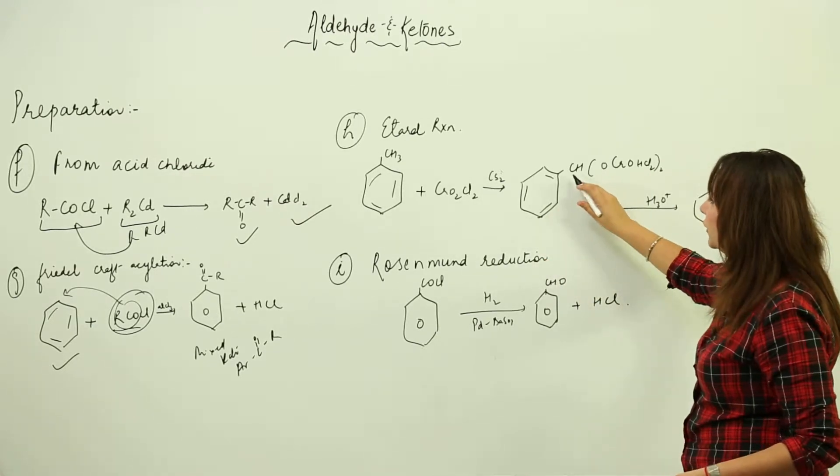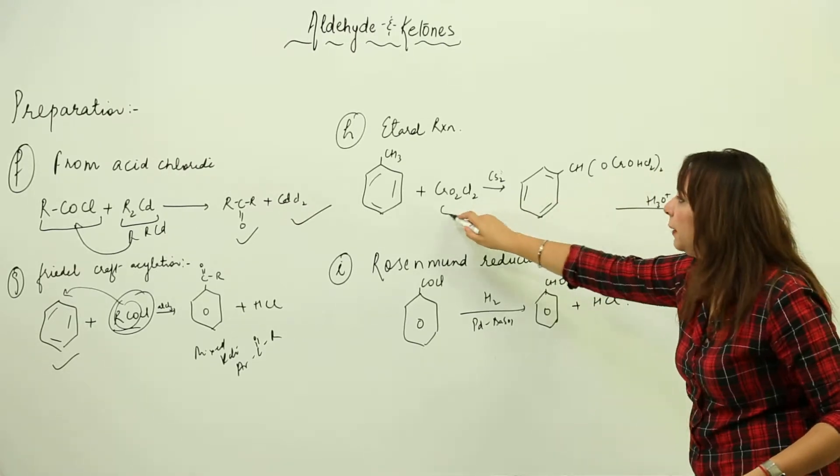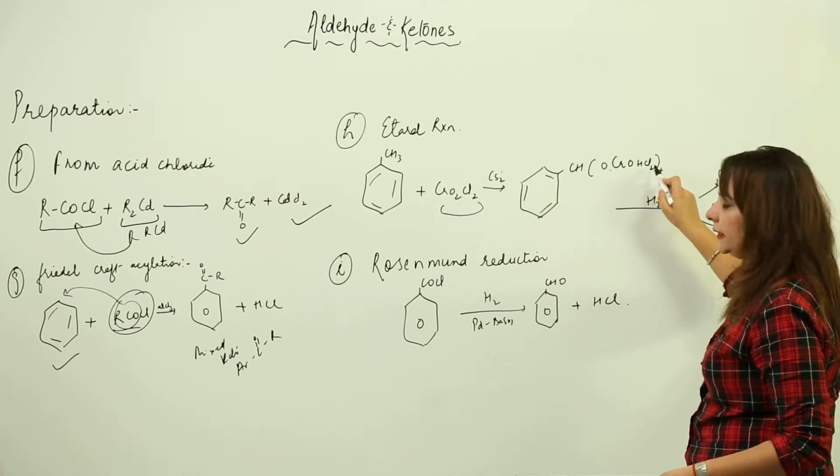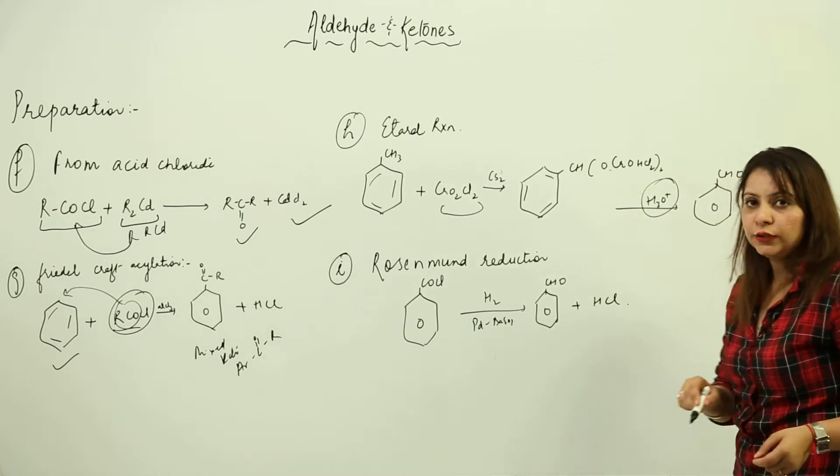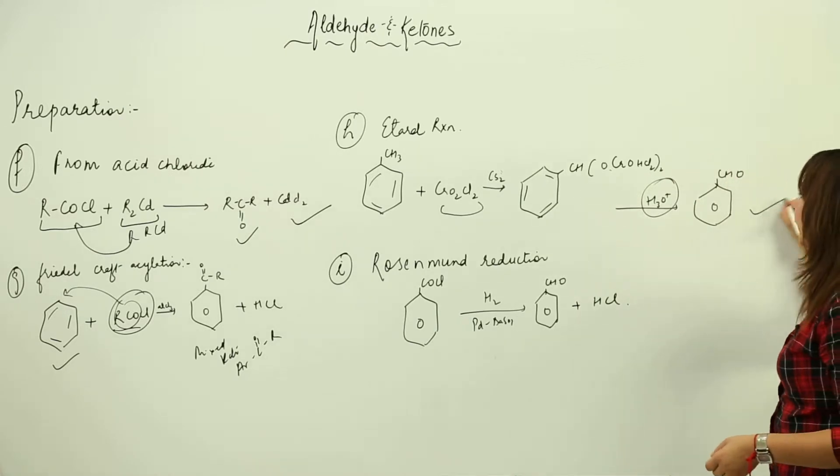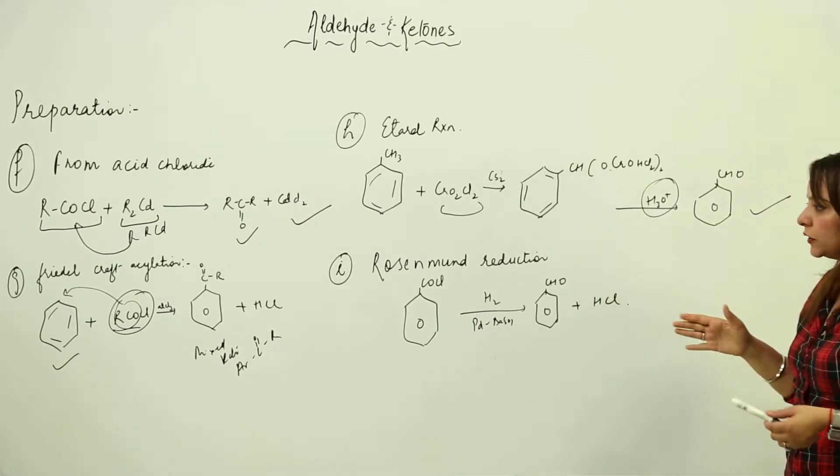When you do it, we get an intermediate where CH is attached with this compound, O-CrO-HCl2 twice. When we react with hydronium ion, it breaks and forms an aldehyde. Last is Rosenmund reduction.